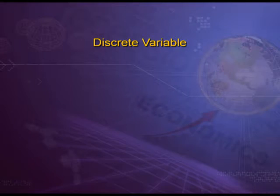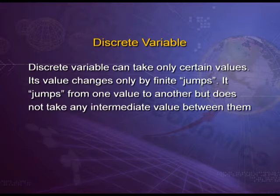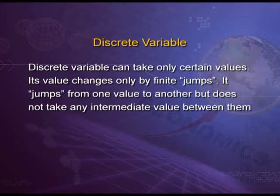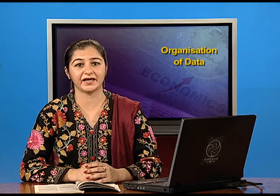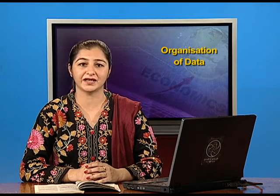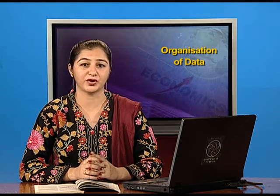The first one is discrete variable. Discrete variable can take only certain values. Its values change only by finite jumps — it jumps from one value to another but does not take any intermediate values between them. For example, a variable like the number of students in a class would assume values that are only whole numbers.